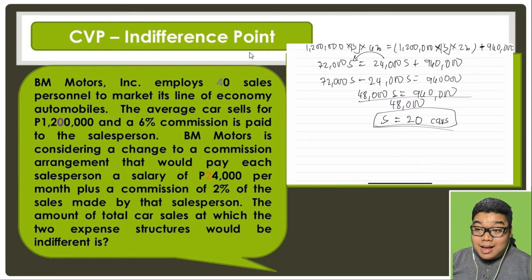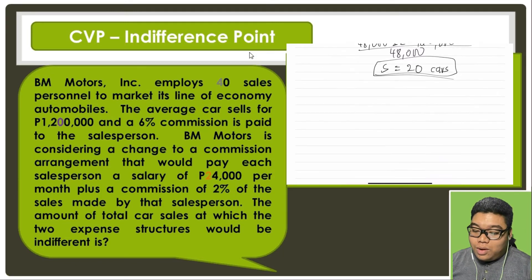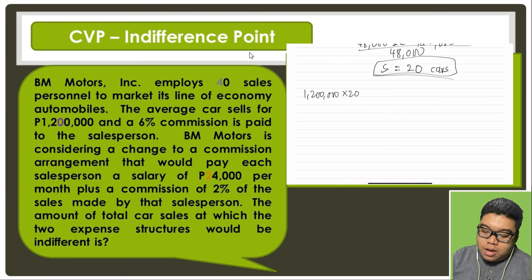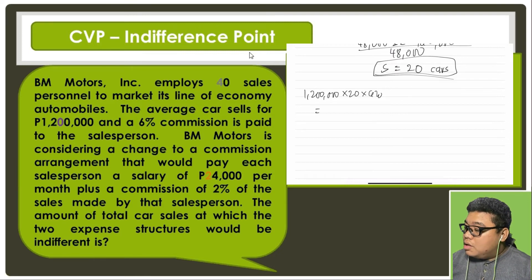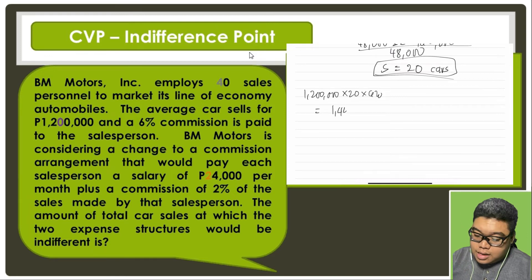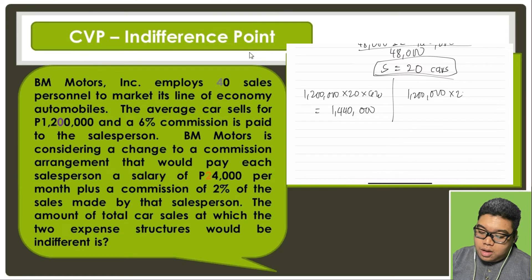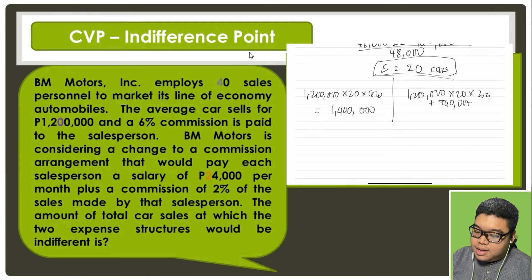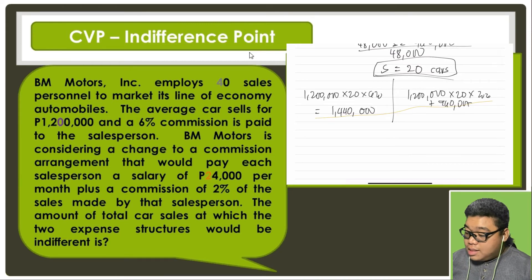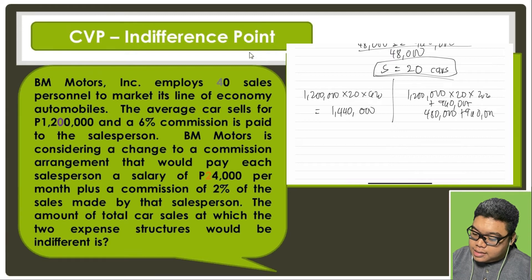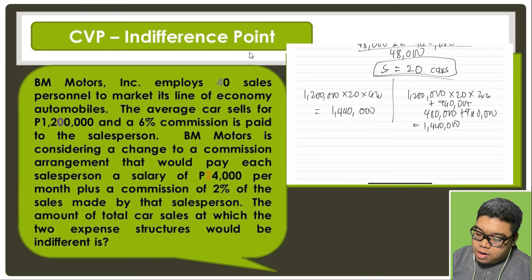So the indifference point is 20 cars. Let's verify: for the current plan, 1,200,000 times 20 times 6% equals 1,440,000. For the proposed plan, 1,200,000 times 20 times 2% equals 480,000, plus 960,000, also equals 1,440,000. Both costs are indeed equal at 20 cars.